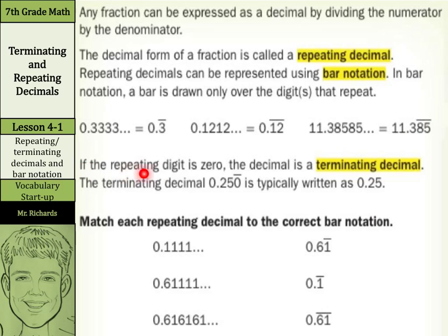If the repeating digit is 0, this means it's a terminating decimal. The terminating decimal 0.250 with that 0 repeating is typically written as 0.25 or 1 fourth. So here we want to match the repeating decimal to the correct bar notation. In 0.11111, we only have the 1 repeating, and so we can represent that here. In 0.611111, what's actually doing the repeating? It's just the 1s, so that's represented up here with the 0.6 with the bar over just the 1. And the last one, it's the 6.1, 6.1, 6.1 repeating, which is straight across here.